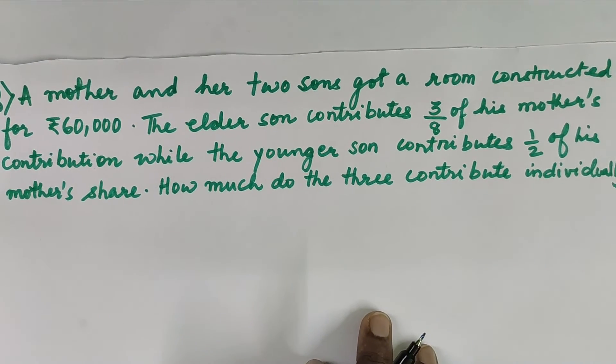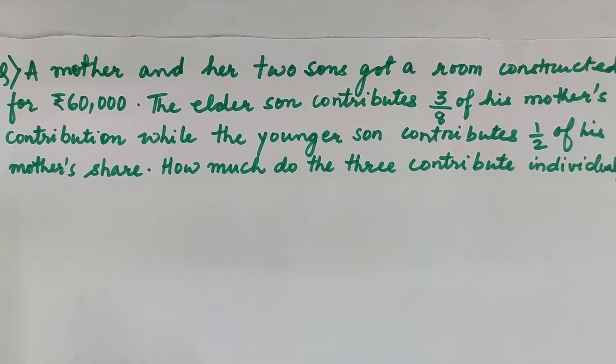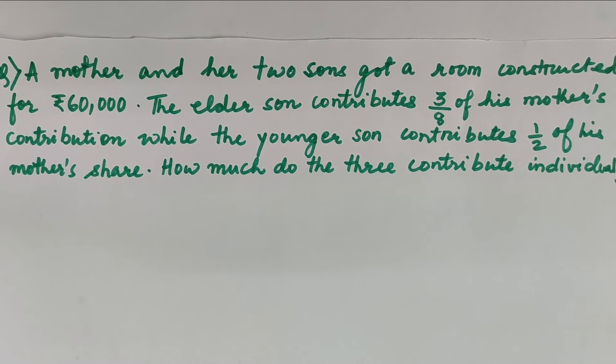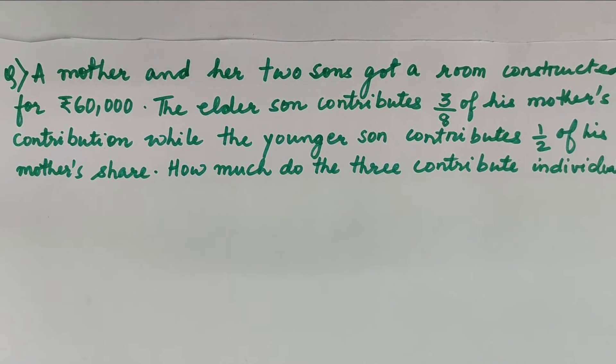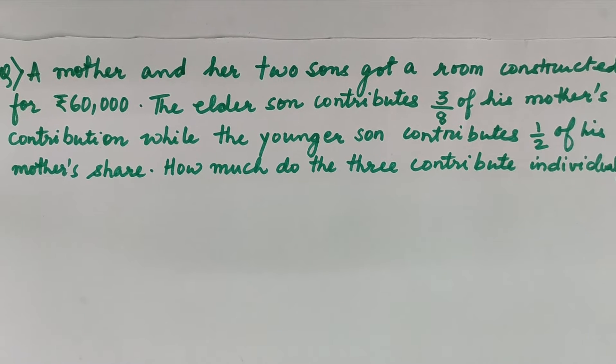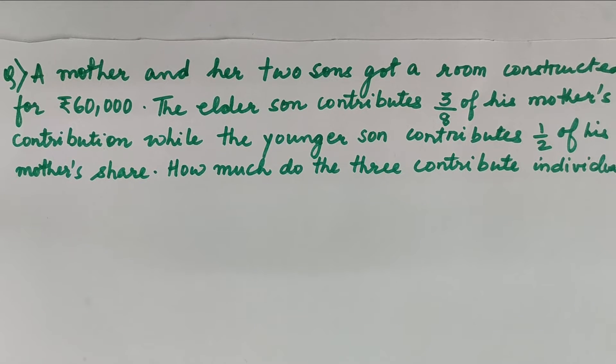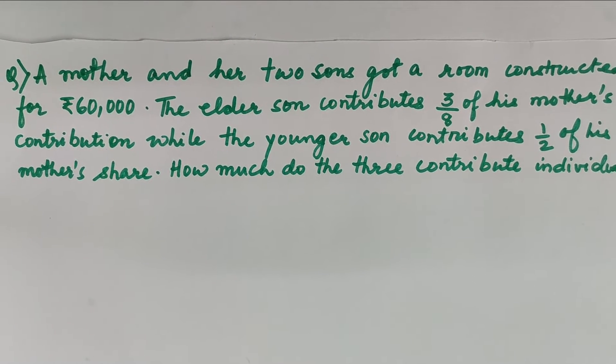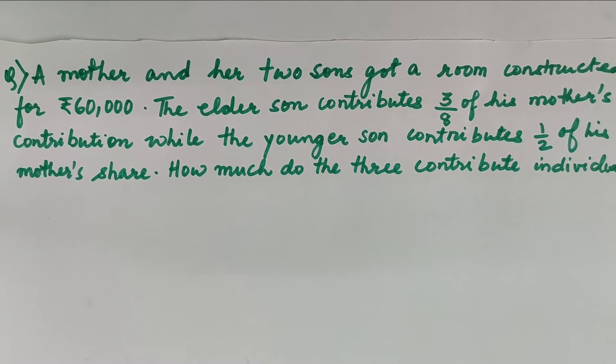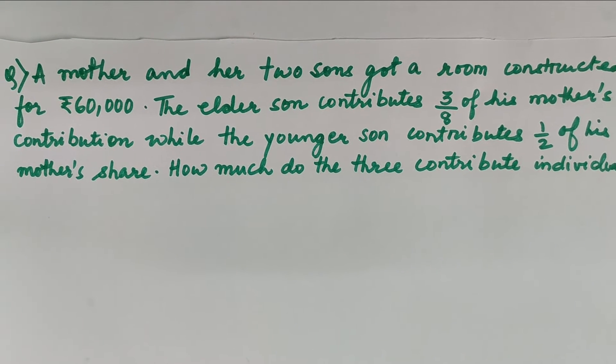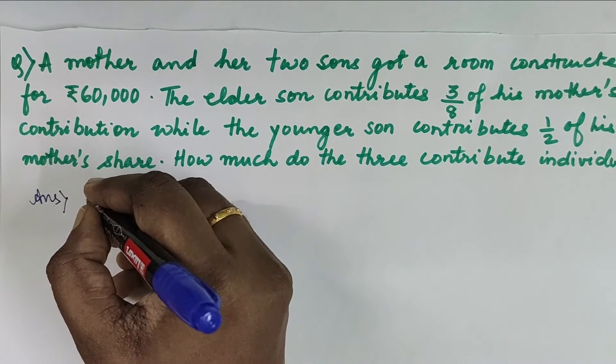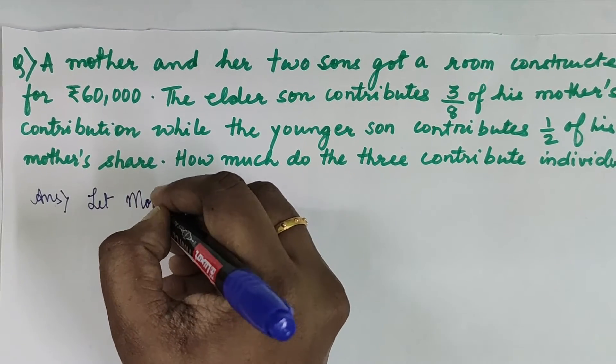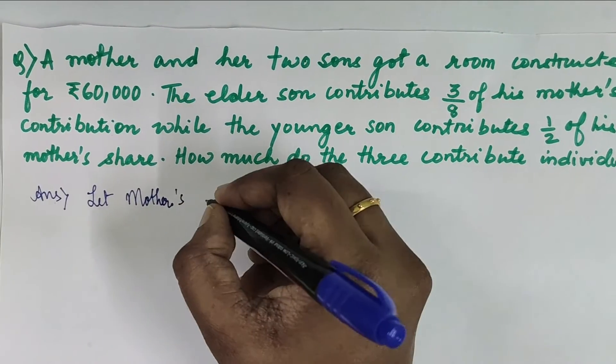As you can see, the next question: A mother and her two sons got a room constructed for ₹60,000. The eldest son contributes 3/8 of his mother's contribution while the youngest son contributes 1/2 of his mother's share. How much do the three contribute individually? So we don't know mother's share, so we'll start with that assuming the mother's share to be x.